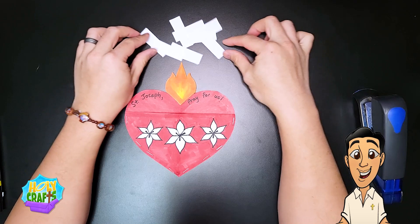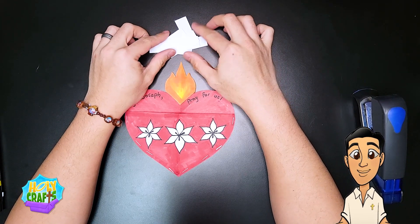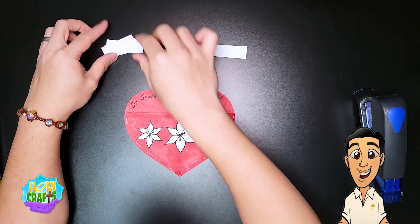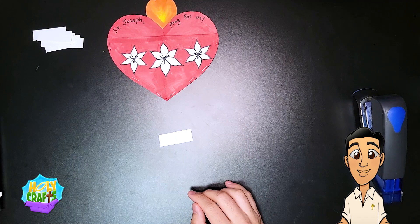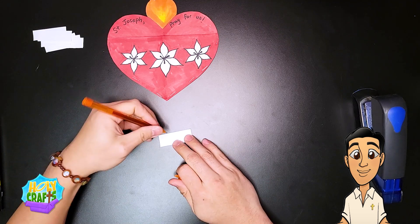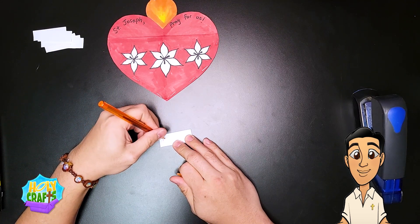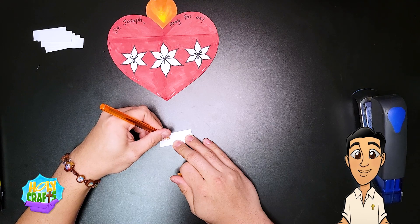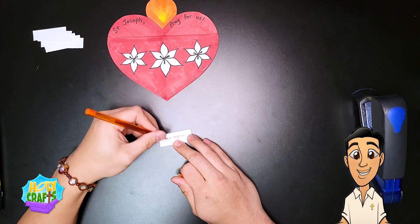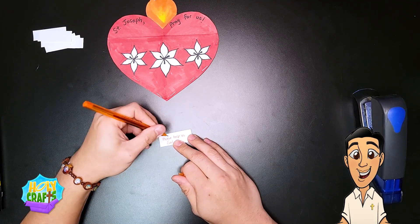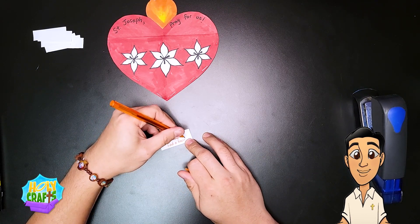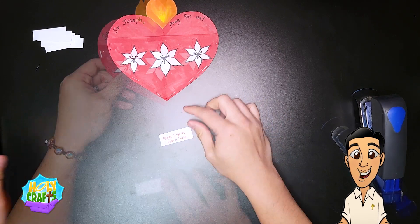Now what I did is I cut out little strips of paper in order for me to write down small intentions that I think about throughout the day. On my first one, I'm going to write please help us find a house. Since Uncle Sam and his wife are trying to find a house, he's going to write a prayer intention to St. Joseph to help him find a house.